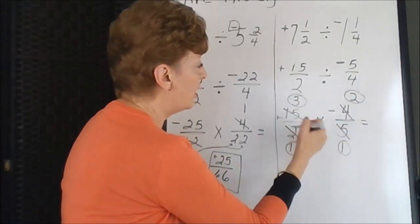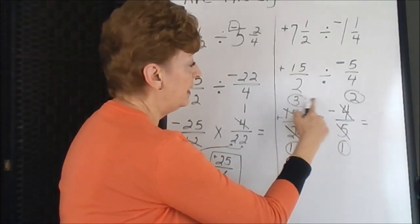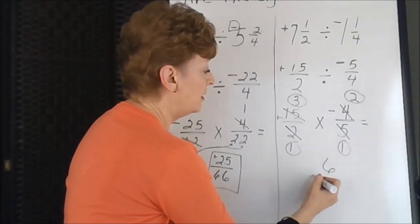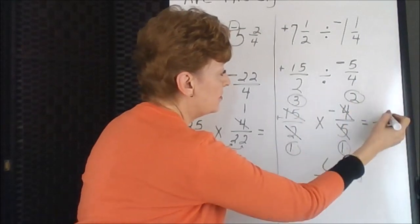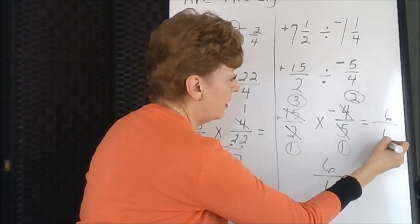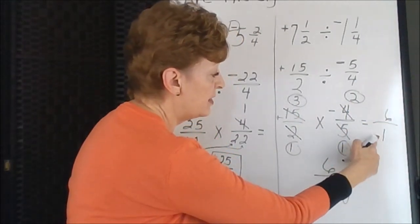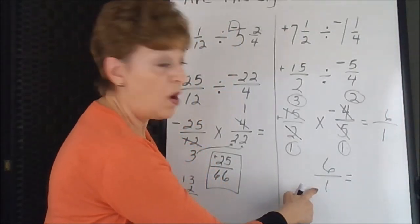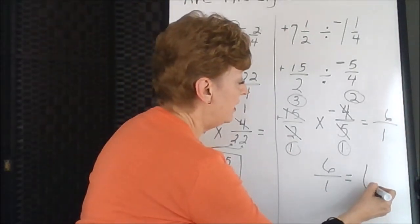Let's do our multiplication. 3 times 2 is 6, 1 times 1 is 1. This one was 3 times 3 is 6, 1 times 1 is 1. And now we're going to reduce that fraction. Anything over 1 is whole. We have a 6 here.